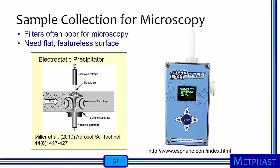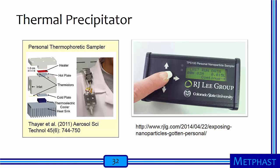There are several special collection devices for microscopy, because filters often have complicated structure making it difficult to identify particles apart from filter media. Instead, we need flat, featureless surfaces to maximize our ability to see particles. One way to achieve this is by electrostatic precipitation. ESPNano is a specific instrument available for this purpose, where particles in an incoming airstream are electrically charged and then attracted to and deposited on an oppositely charged substrate suitable for electron microscopy. An alternative is a thermal precipitator, where particles move from hot to cold in a thermal gradient onto a substrate. A commercial version is available from RJ Lee Group.